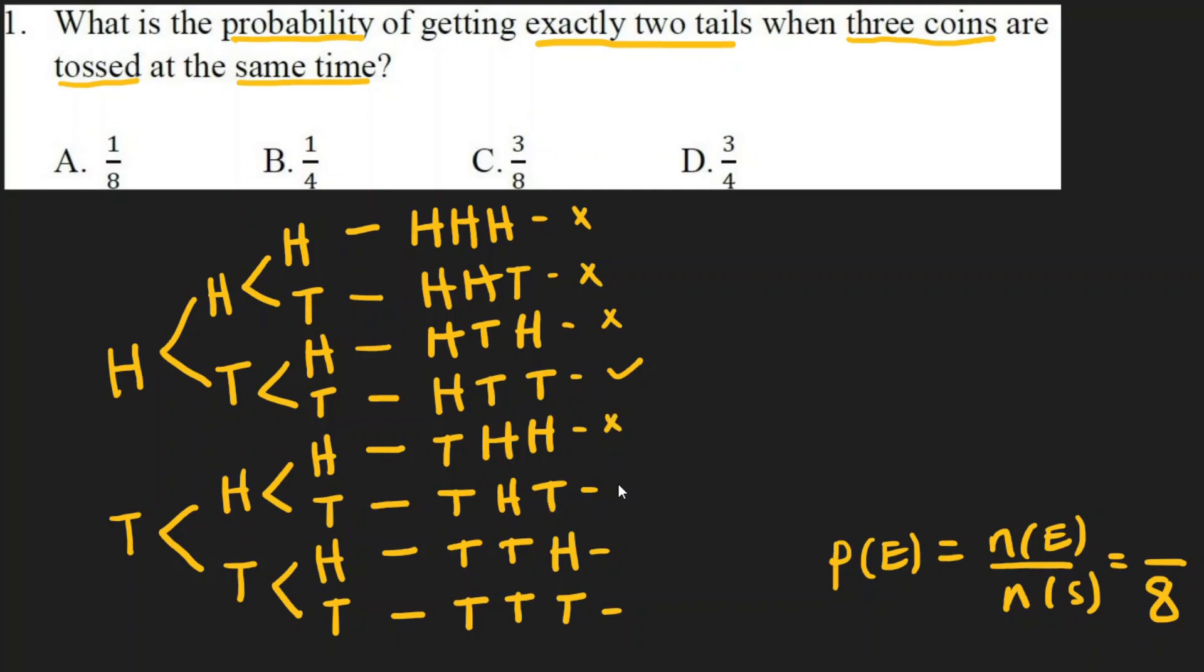Looking at the outcomes, exactly two tails appears in head tail tail, tail head tail, and tail tail head. So the number of favorable outcomes is three. The probability of getting exactly two tails when three coins are tossed at the same time is three over eight.